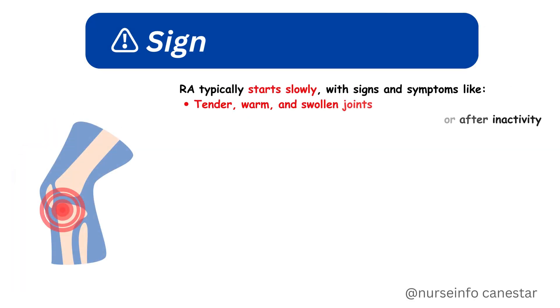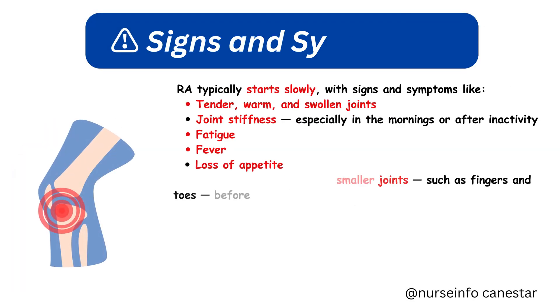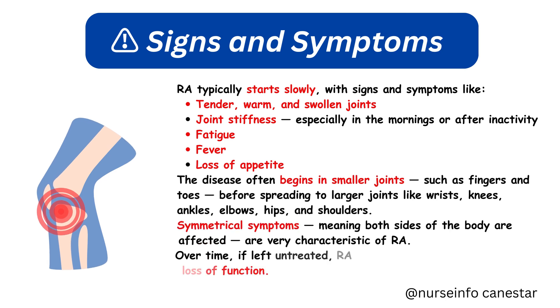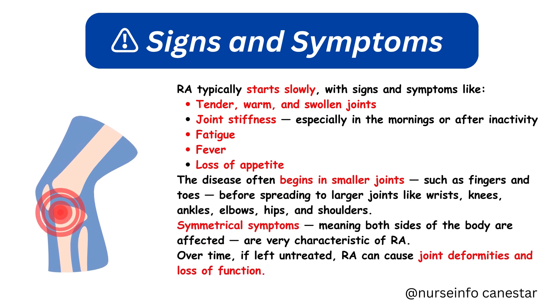Researchers believe that an environmental trigger like a virus or bacteria activates the immune system in someone with the right genetic makeup. Signs and Symptoms: RA typically starts slowly.